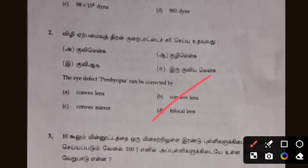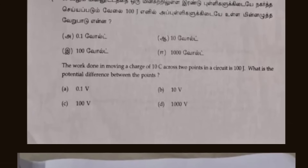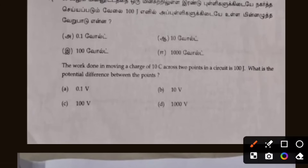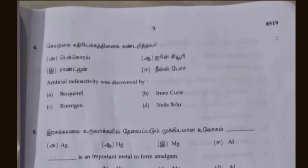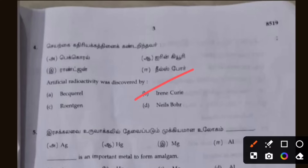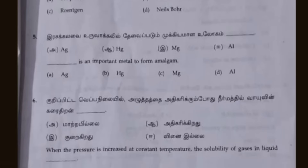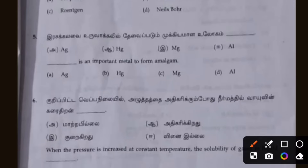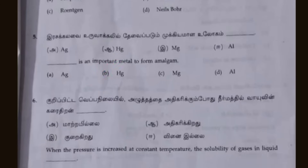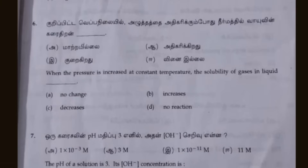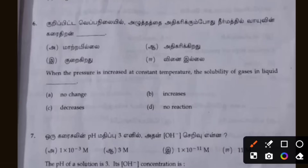The second one is B. The third one is B. The fourth one is B. The second one is Hg — the important metal to form amalgam is Hg. For the 6th one, when the pressure is increased at constant temperature, the solubility of gases in liquid increases. Answer is B.